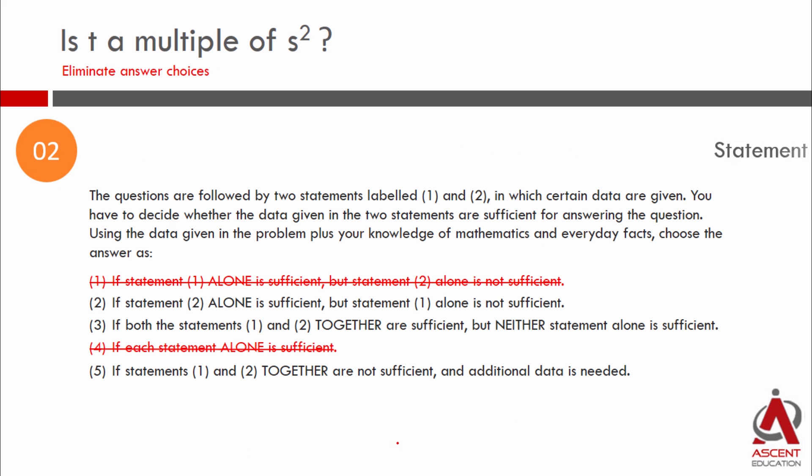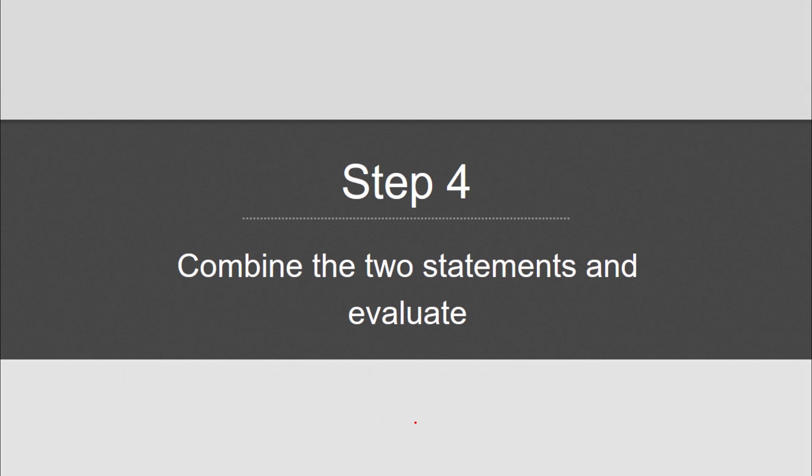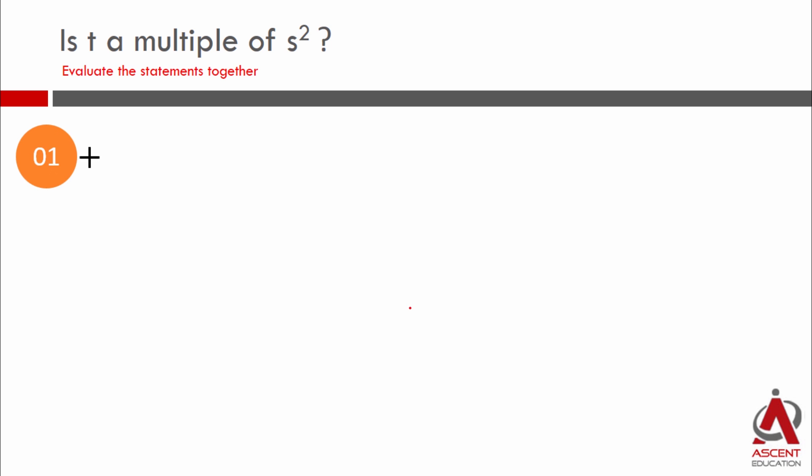We eliminated 1 and 4. Now we'll eliminate one more answer choice, which is we'll eliminate choice 2. What we are left with is either 3 or 5. To decide between 3 or 5, let's combine the two statements. This is what we have from statements 1 and 2.